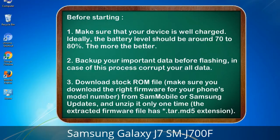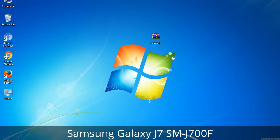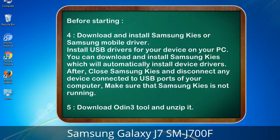3. Download the stock ROM file. Make sure you download the right firmware for your phone's model number from Sammobile or Samsung Updates, and unzip it only one time. The extracted firmware file will have a .tar.md5 extension.